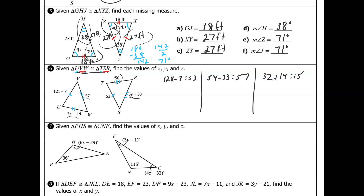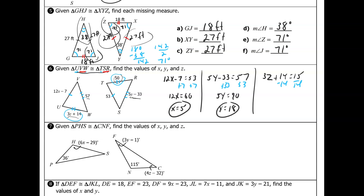Solving those equations: for X, add 7 to both sides to get 12X = 60, so X = 5. For Y, add 33 to both sides to get 5Y = 90, so Y = 18. For Z, subtract 14 from both sides to get 3Z = 36, so Z = 12.